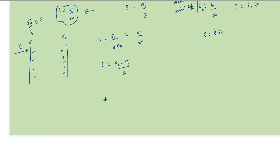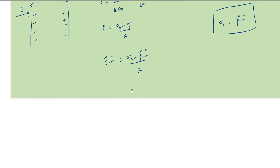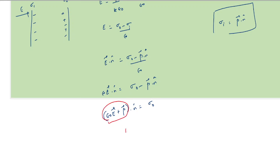In vector form, E·n̂ = (σ₀ - σᵢ)/ε₀, where n̂ is the normal to the surface. Using the relation σᵢ = P·n̂, we get E·n̂ = (σ₀ - P·n̂)/ε₀. Cross-multiplying: ε₀·E·n̂ + P·n̂ = σ₀, which gives (ε₀E + P)·n̂ = σ₀. We call this term the displacement vector D, so D·n̂ = σ₀.